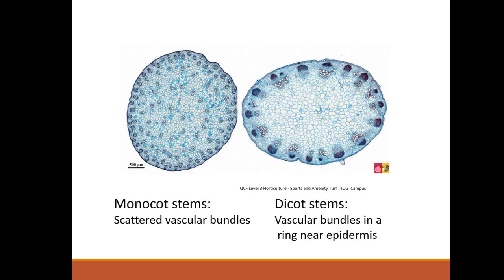Monocot stems have scattered vascular bundles — the vascular bundles being the xylem and the phloem. Dicot stems have them arranged in a ring near the epidermis.